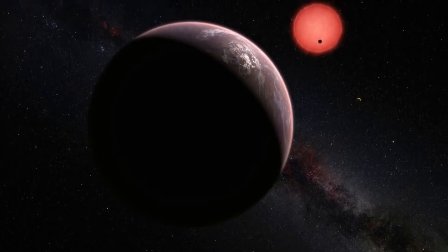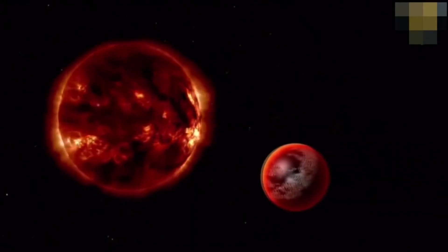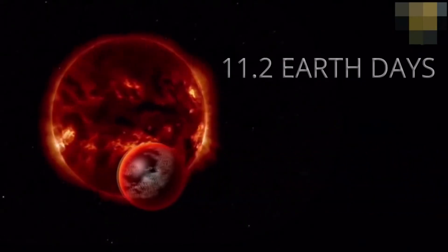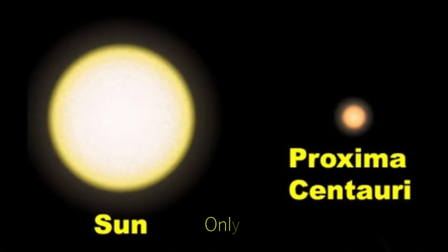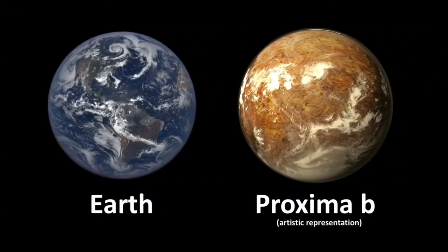Proxima Centauri b is 1.17 times the mass of Earth. It orbits its star in 11.2 days, compared to Earth's year-long orbit, a lot closer than Earth is to the Sun. Because the star is a red dwarf, it is in the habitable zone of Proxima Centauri.